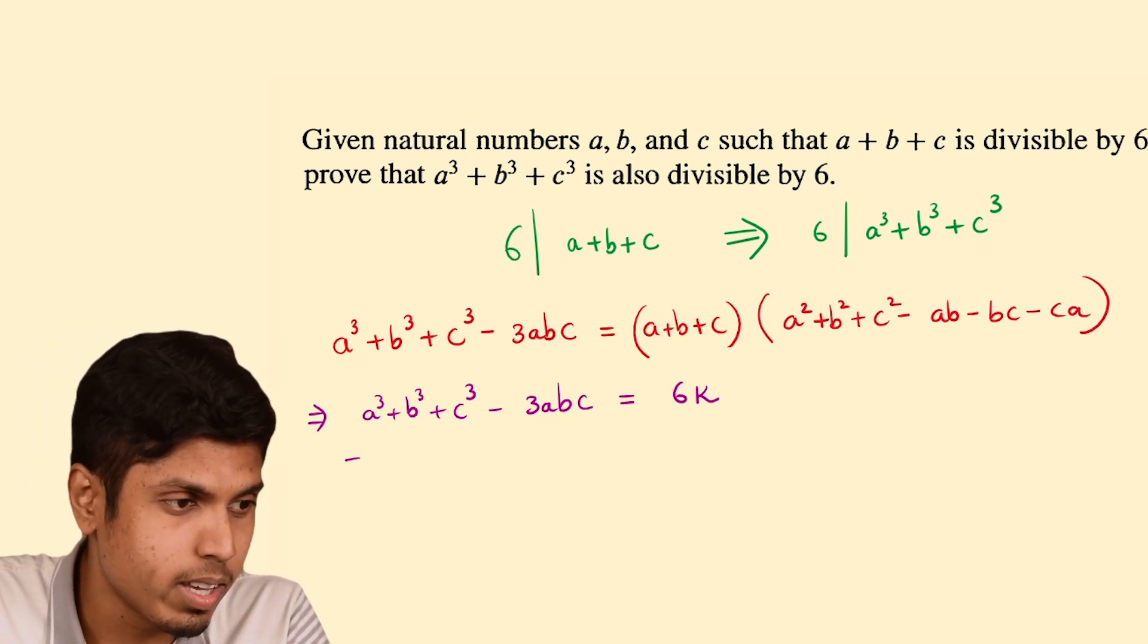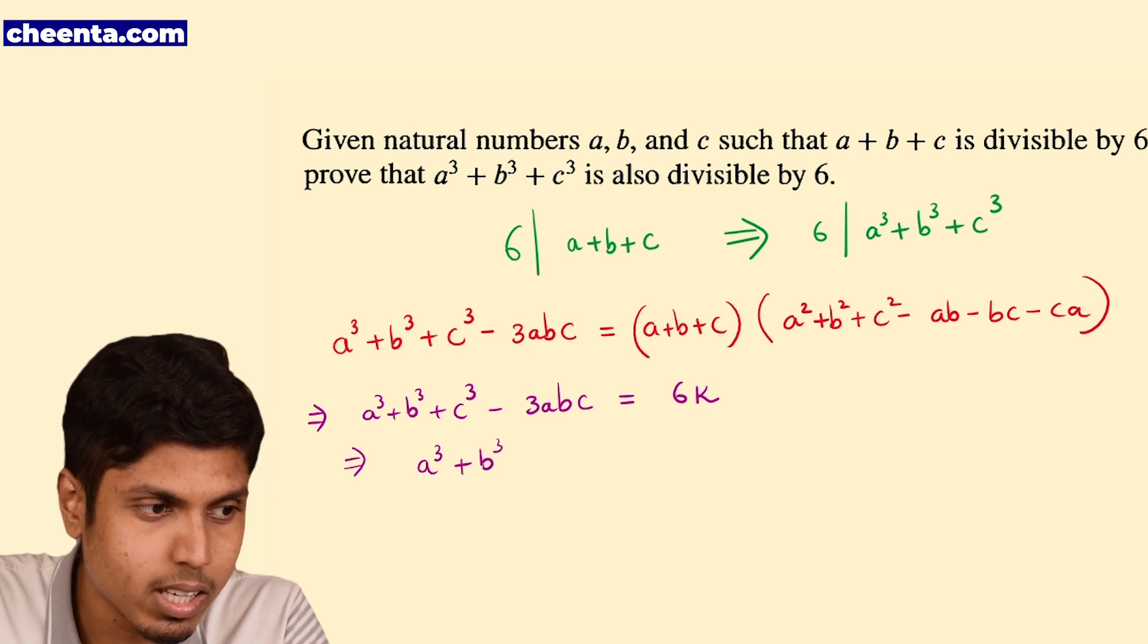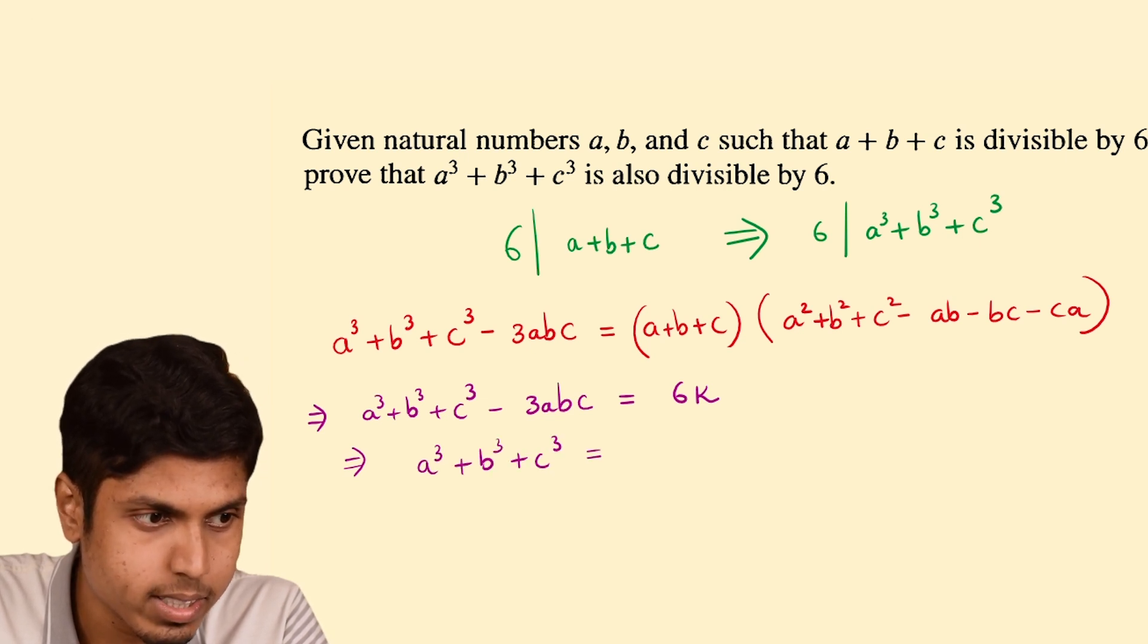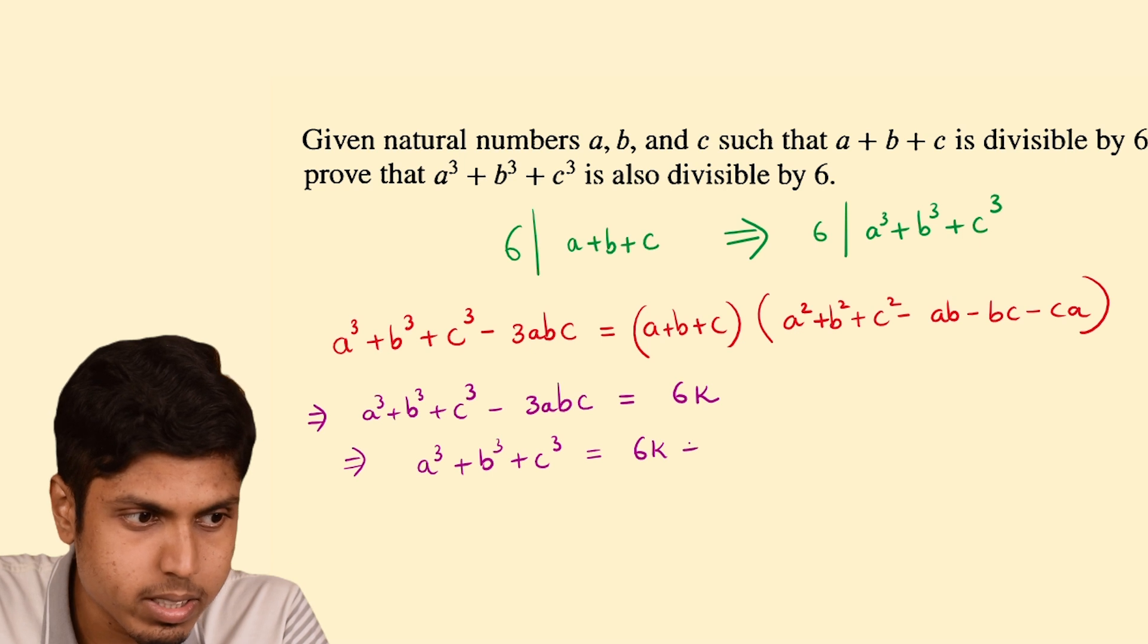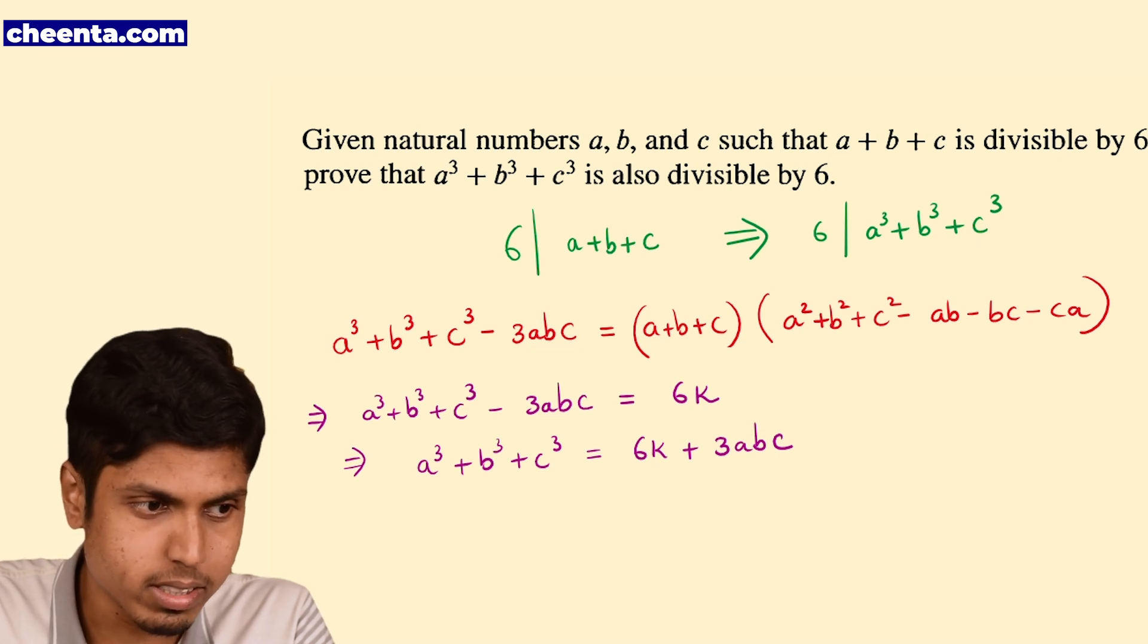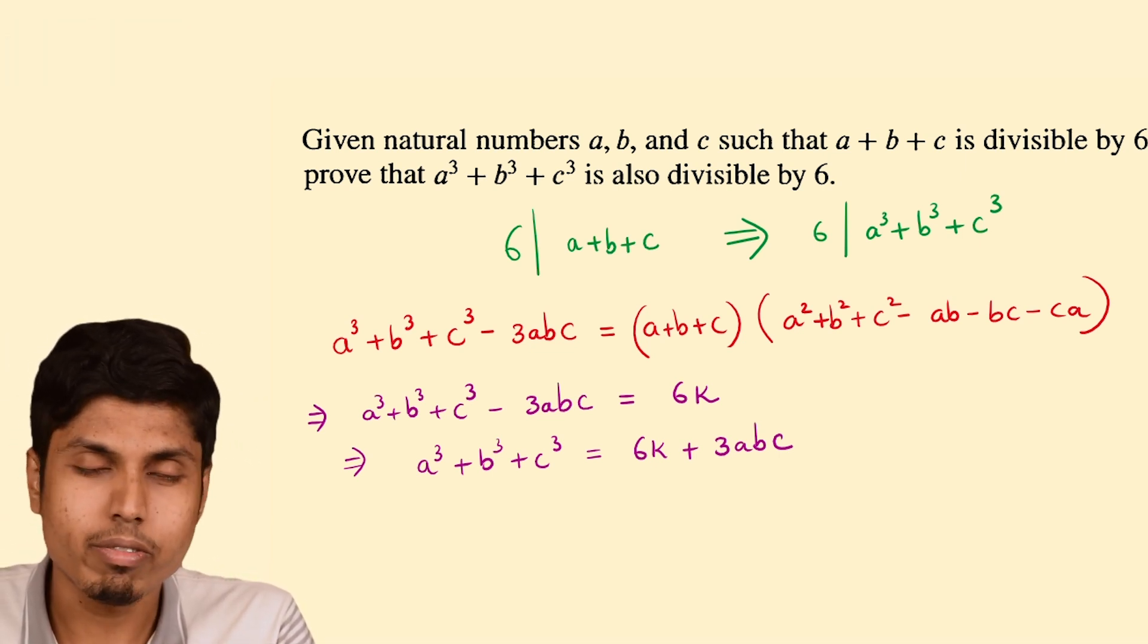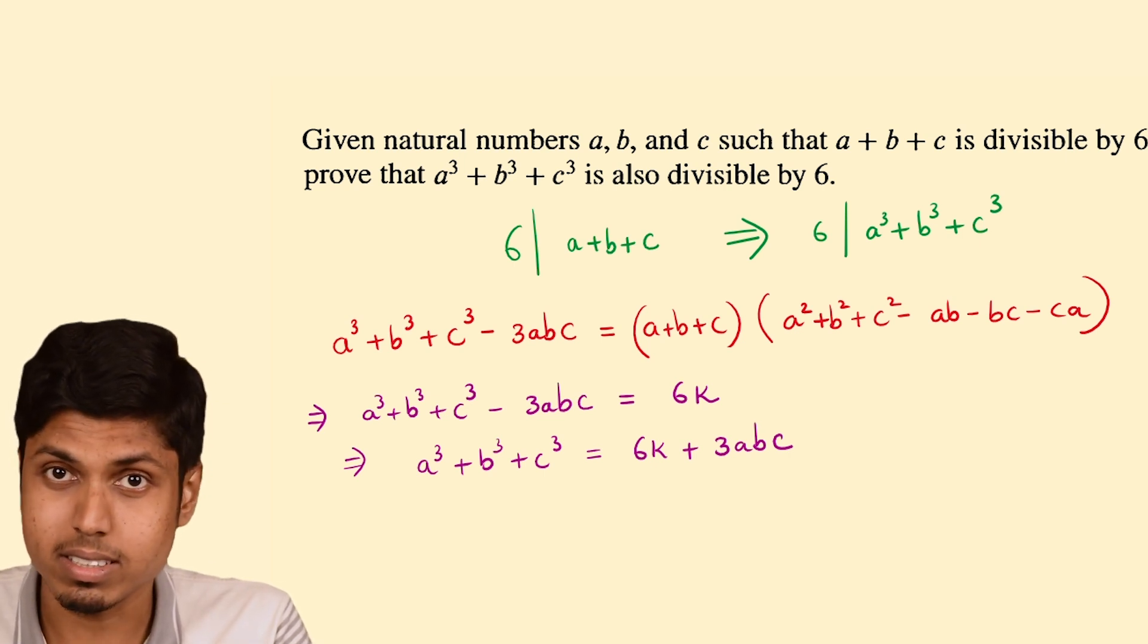Now, you know what should be proved? So A cube plus B cube plus C cube equals 6k plus 3ABC. Alright, so for the LHS to be divisible by 6, RHS needs to be divisible by 6. So it suffices to prove that RHS is divisible by 6.